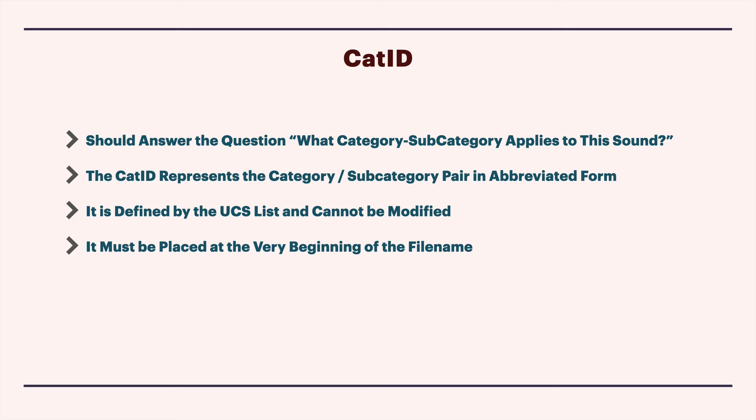The cat ID is defined by the Universal Category System list and it can't be modified. It's the single rigid requirement of this system - the cat ID is unchanging, and we all agree on that. We consult the list, assign the category and subcategory to that cat ID, and use it at the head of the file name. It must be placed at the very beginning of the file name, because a lot of the tools will expect to find it there. If we change the order around in the file name, it sort of breaks the entire system.